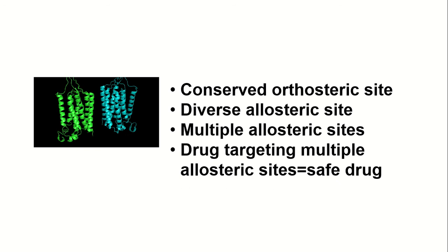MGluR5 also has a unique deep sub-pocket near its allosteric site. This pocket is unique because it has a very narrow entrance in all other MGlu subtypes but is accessible only in MGluR5 because of the smaller side chains of glycine, proline, and alanine located in MGluR5. Thus, drugs that can target this pocket will be highly selective for MGluR5.